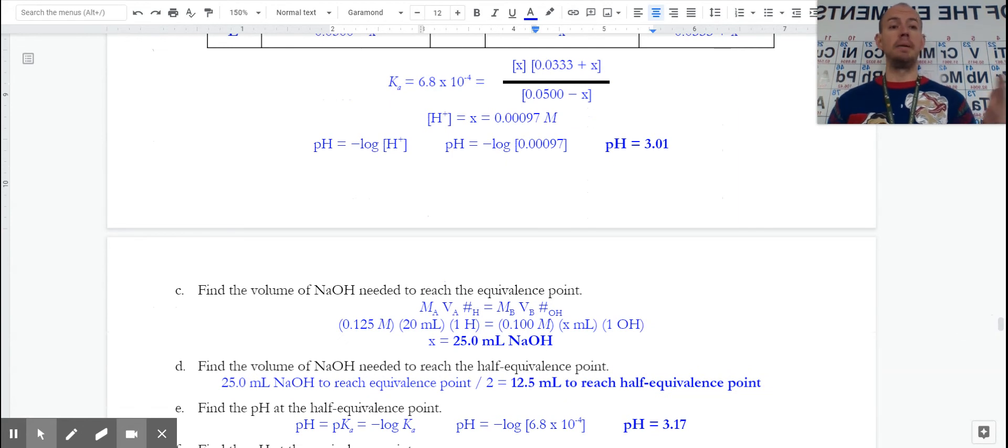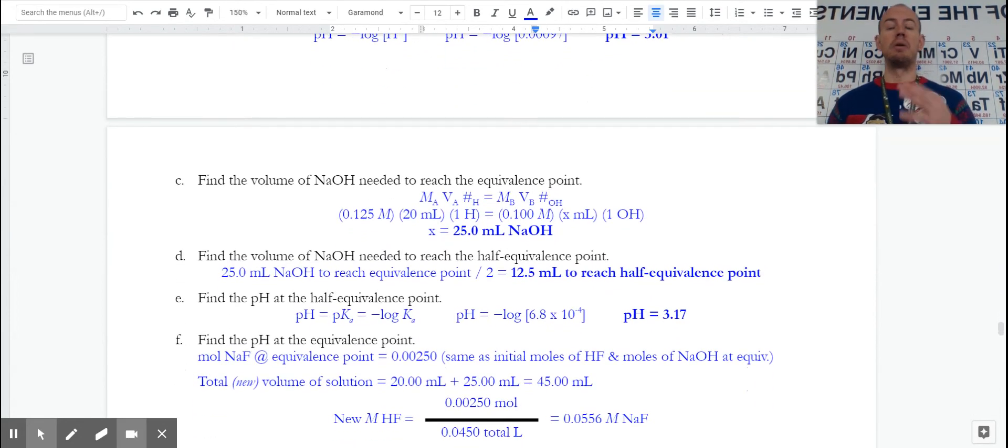Then we would be thinking maybe more easy math, multiple choice, or yes, a question by itself: find the volume needed to reach the equivalence point. Here, I did the shortcut method, molarity times volume times the number of hydrogen ions, molarity times volume times hydrogen ions, it gave me that. Then part D gets me some easy math as well.